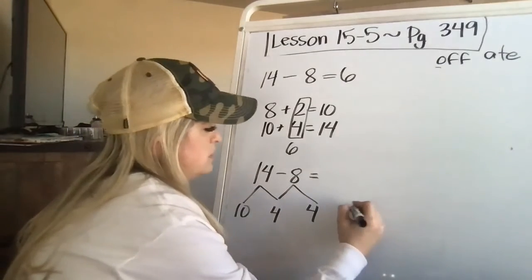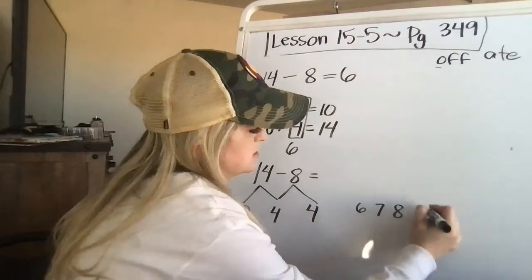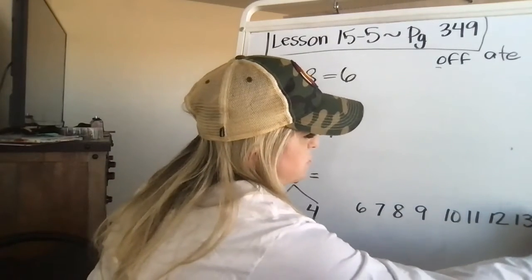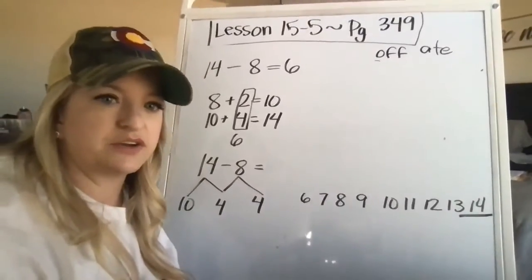If I wanted to do it with subtraction, it would look like this. Break it down into 10 and four. Eight is four plus four. Now I'm going to draw it on the number line. Six, seven, eight, nine, 10, 11, 12, 13. Get kind of a scrunch. 14. Can you see my 14? No, you can't. There. Okay. Now you can see my 14.